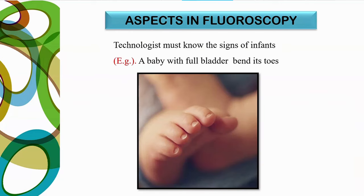Technologists must know the signs of infants. For example, in an MCU procedure where the bladder is being filled with contrast, once the bladder is full, the baby will show a sign of bending its toes. Recognizing this sign allows you to remove the catheter immediately and take the voiding phase of the pediatric imaging.